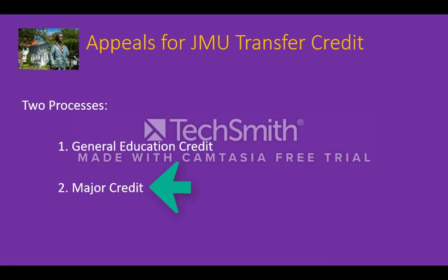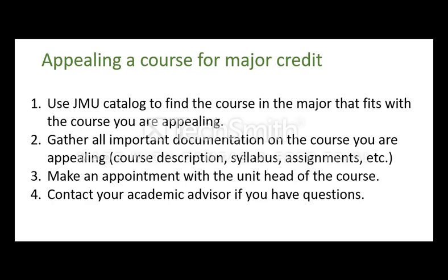Making an appeal for major or subject course credit. To appeal for course credit in the major, you will need to review the JMU undergraduate course catalog to see which course most closely matches the course you took at your previous institution. Collect all of your supportive evidence for the appeal, including a copy of the course description, the course syllabus, and any assignments from your previous institution.